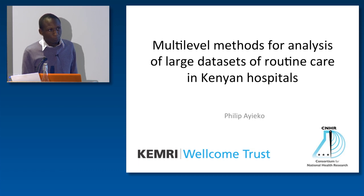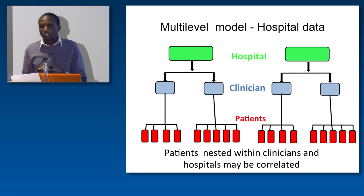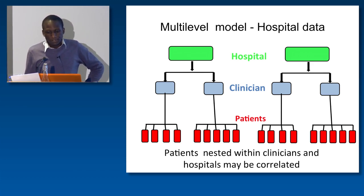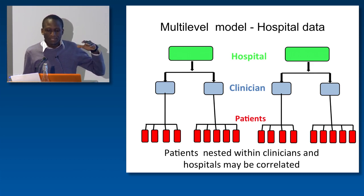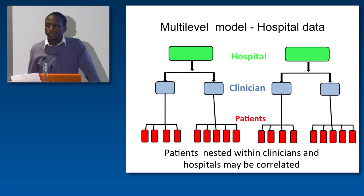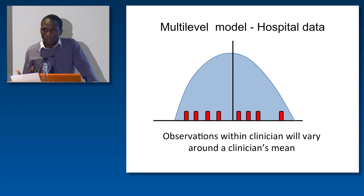So, multi-level modeling or multi-level methods. What are multi-level data? Multi-level data basically describes a structuring within data sets generated from routine health information systems. If you look at the structure of the data, it can be structured into three levels: you collect data at the hospital level, but there is relatedness at the clinician level and patient level. Patients seen by a given clinician are more likely to have similar observations, and clinicians within a given hospital tend to generate more or less the same type of data.